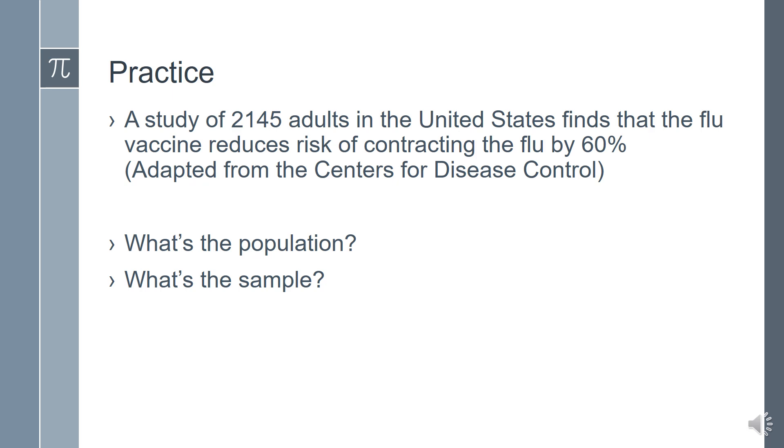I'll go ahead and let you read the next example, and then we'll talk about the population and the sample. Okay, so what is the population? The answers we were looking for for the population is all adults in the USA. All being one of the important words that you will type in when you do your Schoology assignment. In the sample, 2,145 adults that are surveyed.